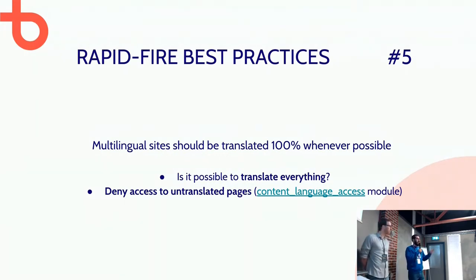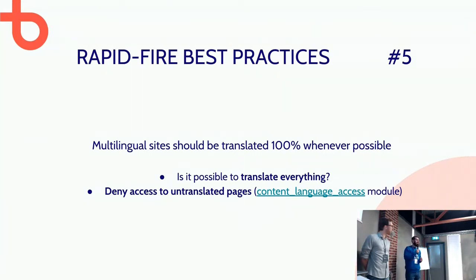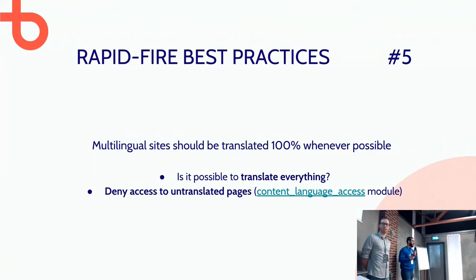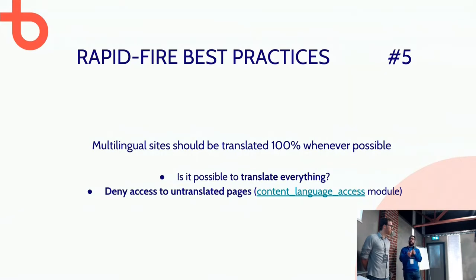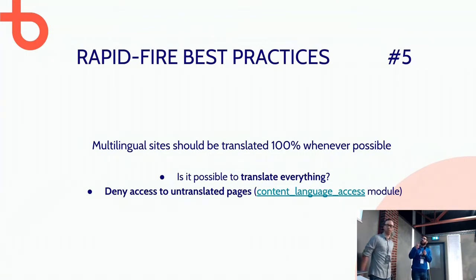When creating a multilingual site — for us it's most often Dutch, French, and English — the client is often lazy and doesn't translate everything. So you end up with pages in an English version that show Dutch content, which is confusing for users and also not good for Google. The first and simplest solution is to translate everything — that's the client's job. But since you don't control the client, a backup solution is to deny access to untranslated pages, which can be done with a module like Content Language Access.